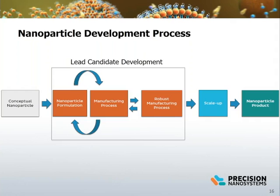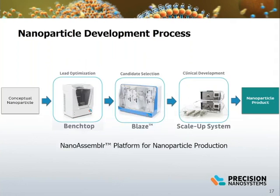Once a lead candidate is selected, the transition to scale-up — increasing to larger volumes for preclinical tox studies — and finally clinical manufacturing is traditionally a non-trivial endeavor. The NanoAssembler platform addresses the issue of throughput and transition to scale-up with the NanoAssembler bench top, Blaze, and scale-up system. The NanoAssembler platform shortens the time needed to bring a conceptual nanoparticle to the clinic.